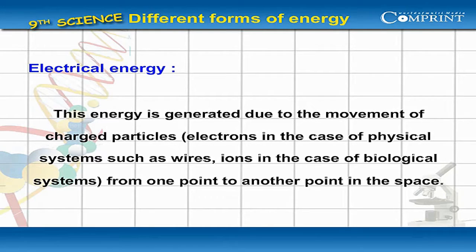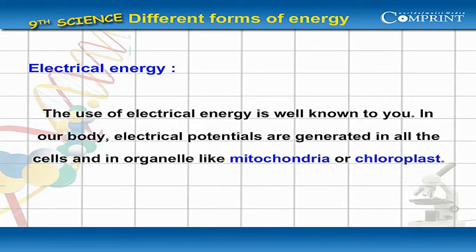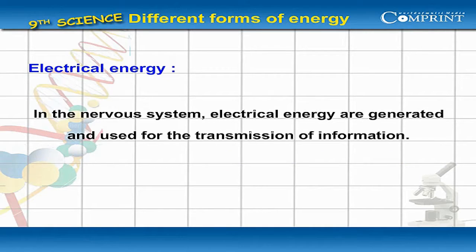Electrical energy is generated due to the movement of charged particles — electrons in physical systems, and ions in the case of biological systems — from one point to another in space. In our body, electrical potentials are generated in all cells and in organelles like mitochondria or chloroplasts.